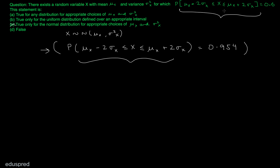This statement will not hold for normal distribution. Now let's look at option A. Option A is saying that this statement is true for any distribution for appropriate choices of μ and σ². We just discussed that this statement is not true for normal distribution, so we definitely cannot say it's true for any distribution. So option A is also not the right answer.